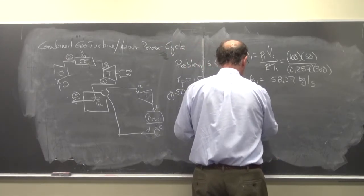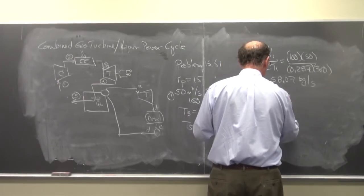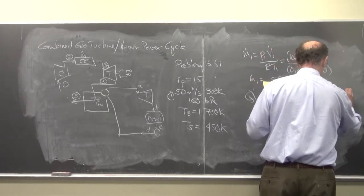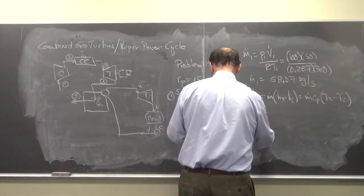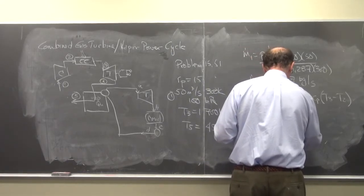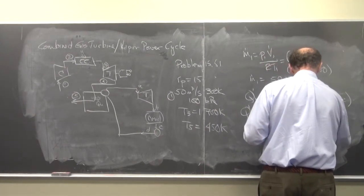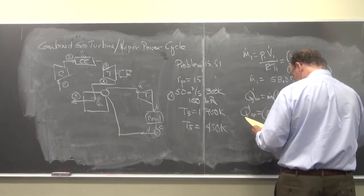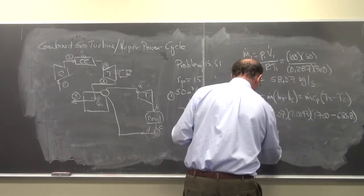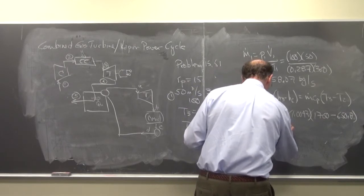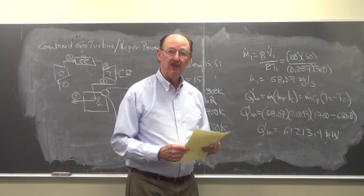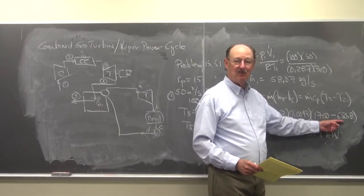So Q dot in is equal to m dot times H3 minus H2, which equals m dot Cp times T3 minus T2. So Q dot in is equal to m dot Cp times T3 minus T2, which equals 61,213.4 kilowatts. Now you're going to say, where did you get this from? What I did, I didn't show you, but I'll show you now.